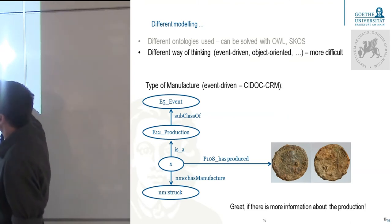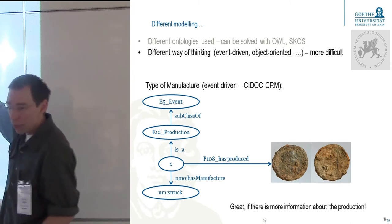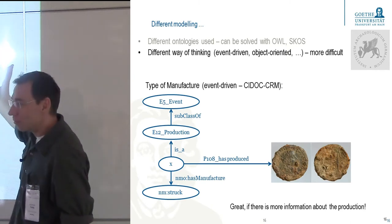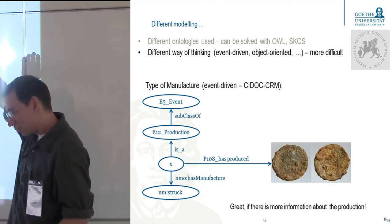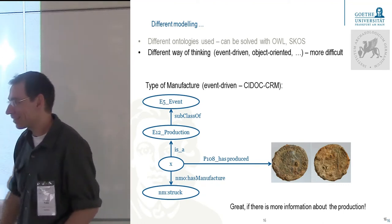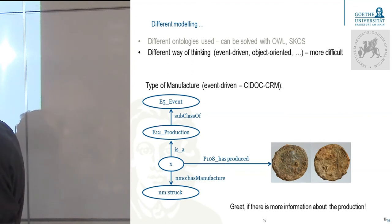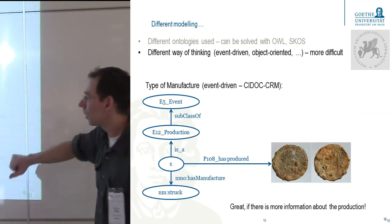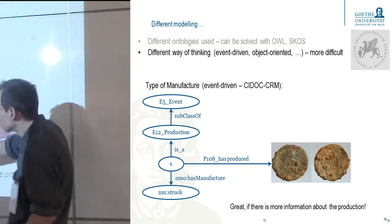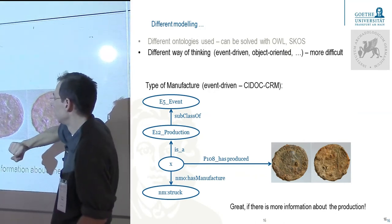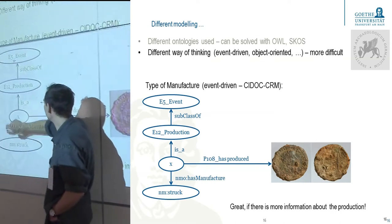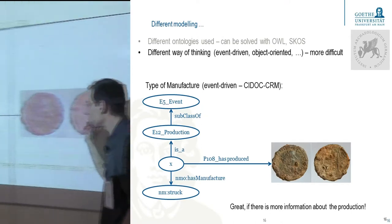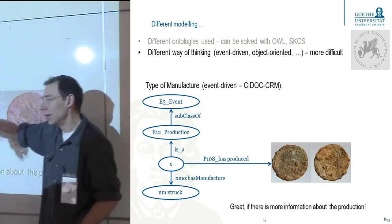For example, here, like in programming, we divide between event-based, object-oriented, and there are a bunch more. If you go to Wikipedia, it's a near-endless list. Here, for example, we see how one could specify something with CIDOC-CRM, roughly. So this is an event. This is the event of the production. And this is how it's produced, and this is what's produced. So the coin was produced in this event, and so on.